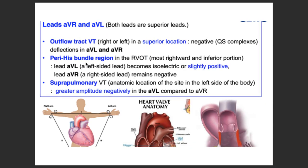If lead 1 is biphasic, it can indicate either anterior or posterior origin. AVL and AVR are augmented superior leads. If you see a negative complex in both AVL and AVR, that is characteristic of outflow tract VT, because the origin is on the opposite side from those superior leads.